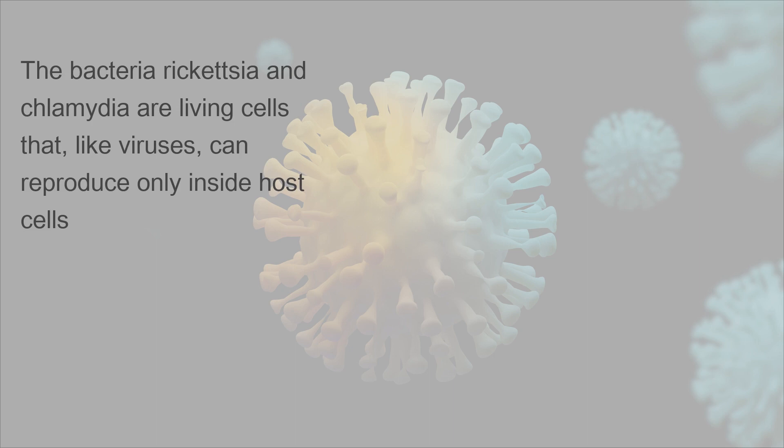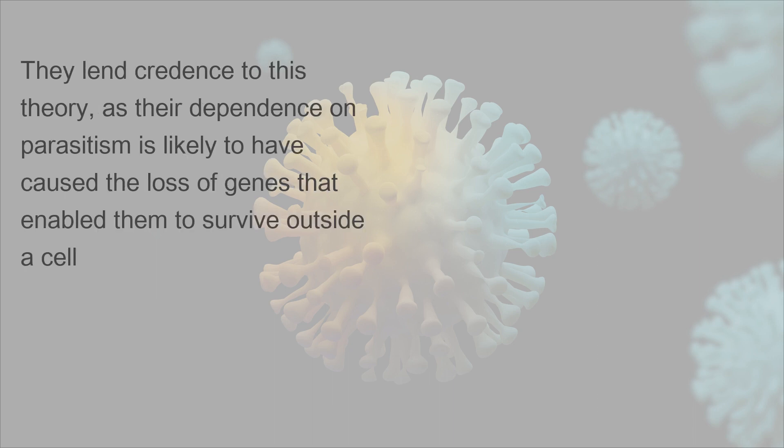The bacteria Rickettsia and Chlamydia are living cells that, like viruses, can reproduce only inside host cells. They lend credence to this theory, as their dependence on parasitism is likely to have caused the loss of genes that enabled them to survive outside a cell.